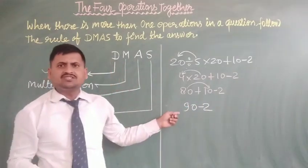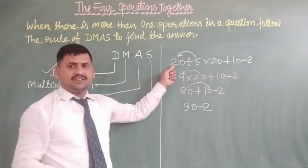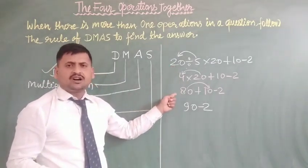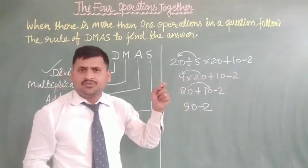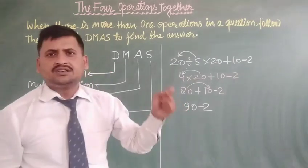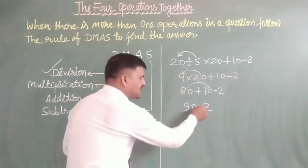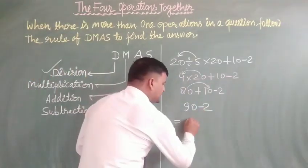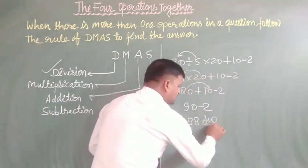90 minus 2. First work: division. Second work: multiplication. Third work: addition. And last — the fourth work — is subtraction. So 90 minus 2 is equal to 88. And 88 is your answer.